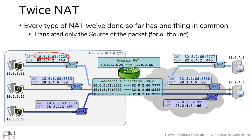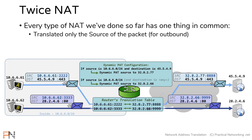This was our dynamic PAT, and again, it was the same thing. Host A's source was 10.6.6.61, and then after translation it was 32.8.2.66 with a new port number. The destination that host A selected was unchanged through the translation. All we changed was the source. Even in our policy NAT, we still only changed the source. The source for host A's packet was 10.6.6.61 — that's what changed — but the destination of 45.5.4.9 was unchanged.